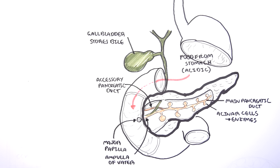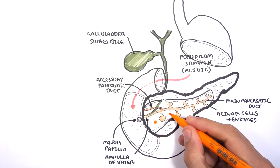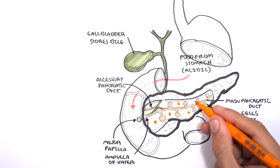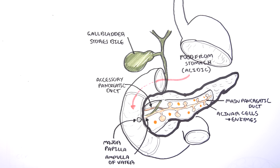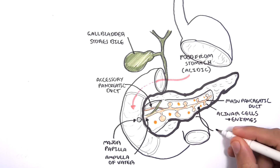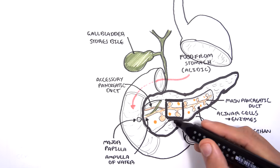98% of cells in the pancreas are exocrine cells, which produce digestive enzymes and juices. The other 2% are endocrine cells responsible for hormones such as insulin. These hormone-producing cells are found in clusters called the islets of Langerhans, and their role in the human body is extremely important.